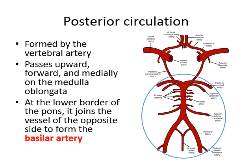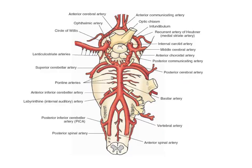Moving on to the posterior circulation: it is formed by the vertebral arteries, which pass upwards, forwards, and medially on the medulla oblongata. At the lower border of the pons, the two vertebral arteries join to form the basilar artery, which continues upwards forming the posterior circulation. The posterior and anterior circulation may be joined together by the posterior communicating artery. This diagram shows the posterior circulation quite clearly, illustrating how it lies on the pons and medulla and the different branches arising from it.